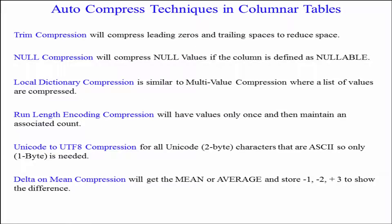Here are some of the compression techniques. Trim compression compresses leading zeros and trailing spaces, reducing a lot of space. Null compression compresses null values. Local dictionary compression is similar to multi-value compression — for example, all rows where state is California get compressed together. Run length encoding stores values only once and maintains an associated count. Unicode to UTF-8 compression converts 2-byte Unicode characters that are ASCII to a single byte. Delta on mean compression stores the mean or average and then records differences such as minus 1, minus 2, plus 3. These are the techniques Teradata decides upon for columnar tables when you load data.